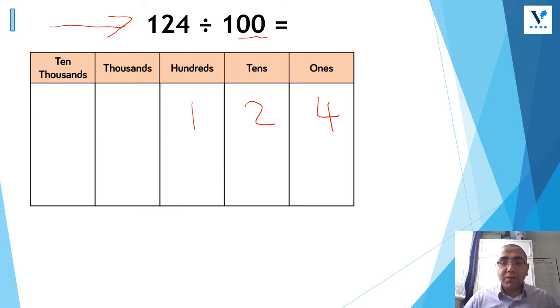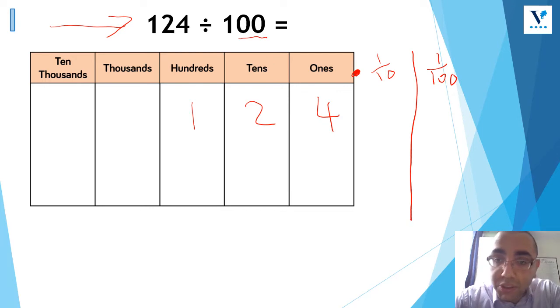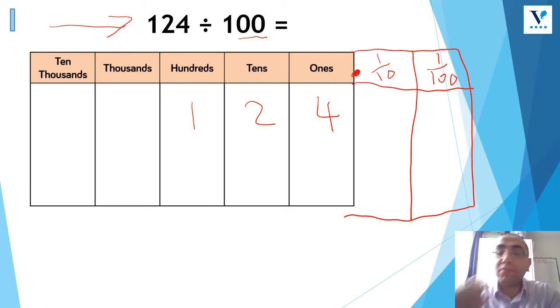However, I've come to a problem, because my place value grid ends in ones. So now I've got to go small. I'm now moving to the right. I'm now moving to the right, but I'm going smaller. So what's smaller than one? So after my ones, I've got my decimal point, which is really important. And then I have my tenths and hundredths. So it's important that you draw that in your place value grid.